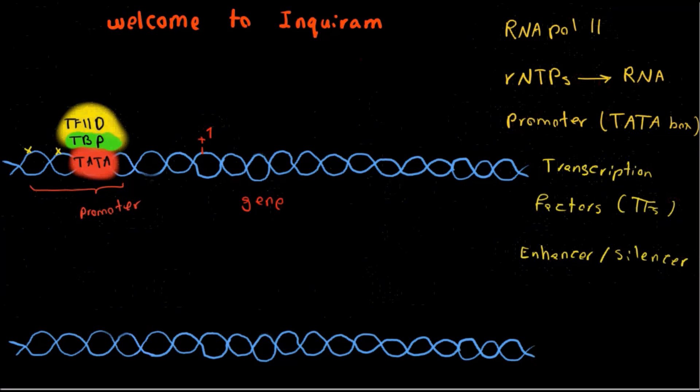TBP then binds a second general transcription factor called TF2B, which I draw here. So the whole thing becomes TBP-TF2B complex at the promoter. This guy, TF2B, is responsible for linking RNA polymerase to this entire complex.